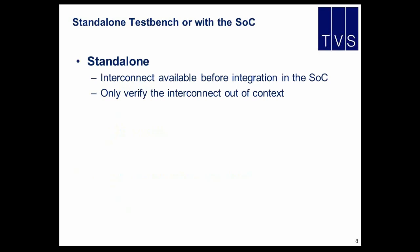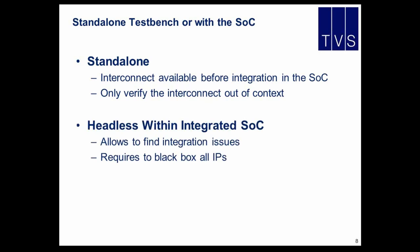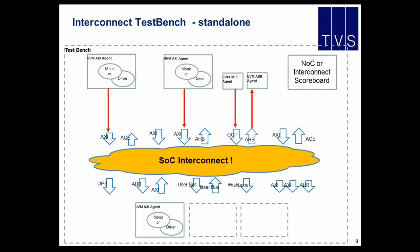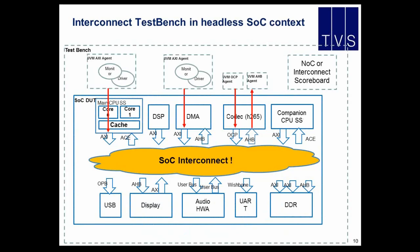Standalone, you will do this because you have the interconnect probably before the SOC — you can verify the interconnect out of the SOC context. However, if you really want to verify the integration, you will need to use what we call a headless environment, where you blackbox the different IPs and drive directly the interfaces of the IPs with your verification IPs. In the standalone test bench, you plug your verification IPs directly to the interfaces of the interconnect. In the headless environment, you use the SOC instance, blackbox the IPs, and drive the interface of the IPs rather than the interconnect — that makes the difference because you will see any issues at the integration level.